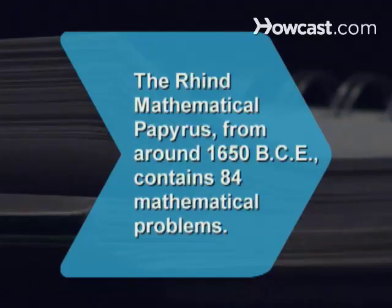Did you know? The Rhind mathematical papyrus, from around 1650 BCE, contains 84 mathematical problems involving administrative and building works.